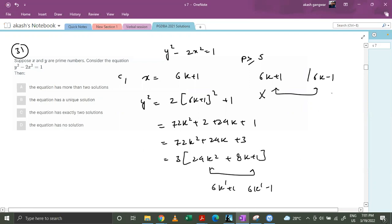So similarly we will check with 6k minus 1 and again we will find out that this is not possible to write y in terms of 6k plus 1 or 6k minus 1. So that's why any prime number which is greater than or equals to 5 is not fine.